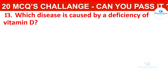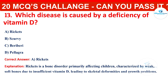Which disease is caused by a deficiency of vitamin D? Your options are: Rickets, Scurvy, Beriberi, or Pellagra. The correct answer is Rickets. Rickets is a bone disorder primarily affecting children, characterized by weak, soft bones due to insufficient vitamin D, leading to skeletal deformities and growth problems.